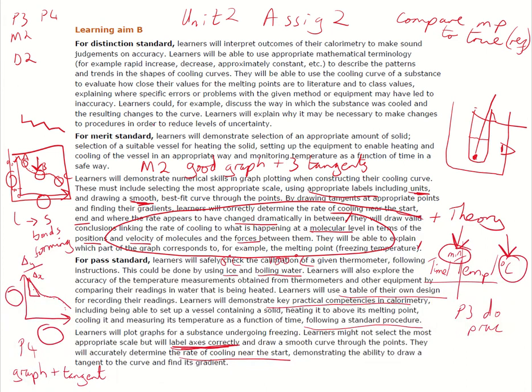Maybe do a percentage difference and see whether or not if there's a large value there. Now the appropriate mathematical terminology: rapid increase, decrease, approximate constant. To be honest, you should have talked about this in the merit bit, so we can hopefully say we've already done that. And likewise, describe the trends and the patterns.